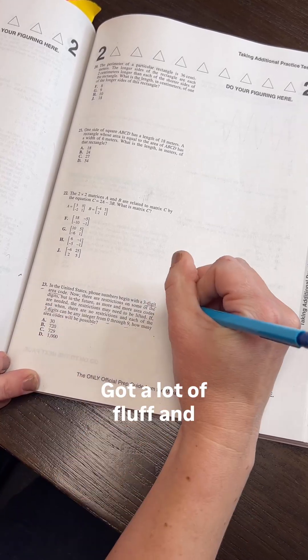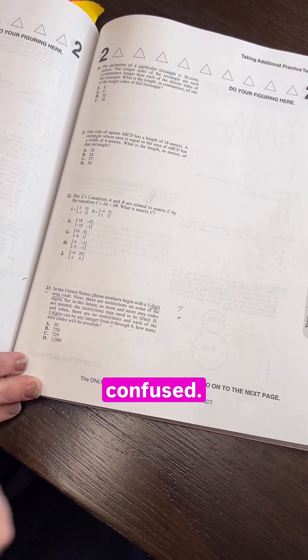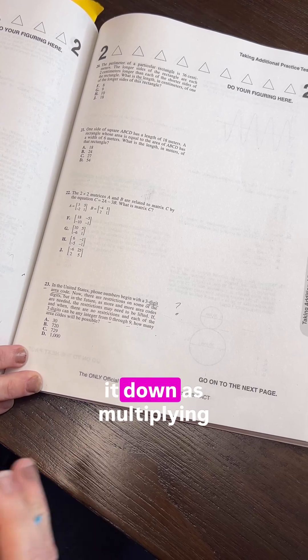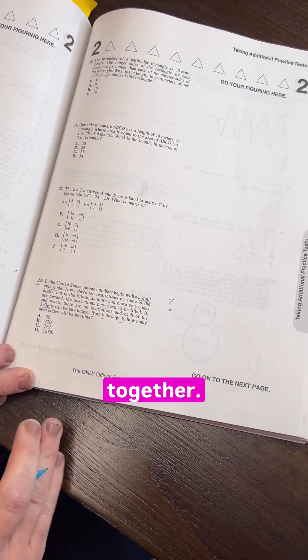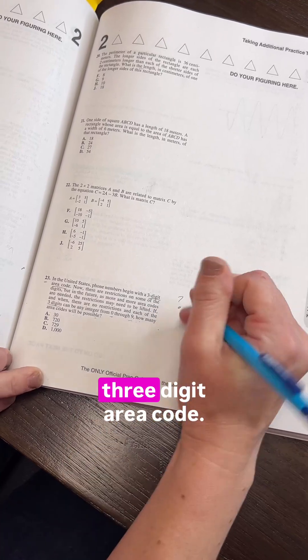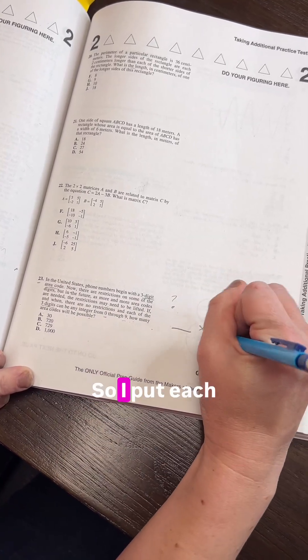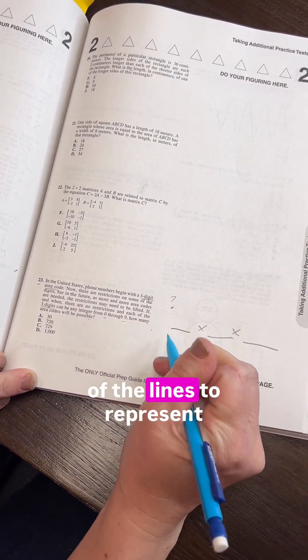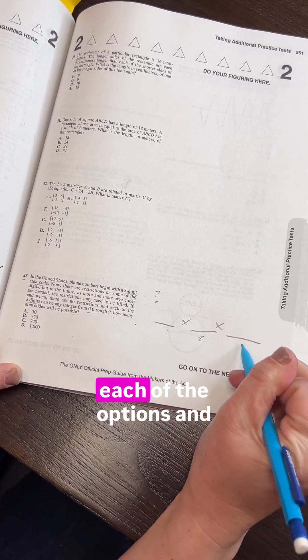This question's got a lot of fluff which makes people really confused. You just have to break it down as multiplying the possibilities together. We have digits 0 through 9 and we need a three-digit area code. So I put each of the lines to represent each of the options.